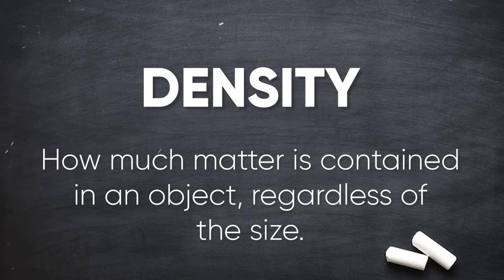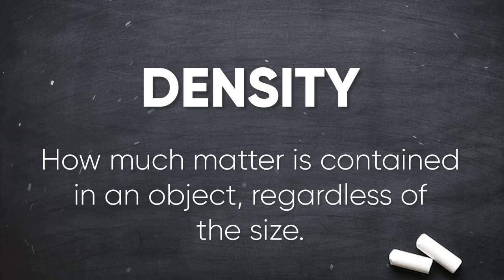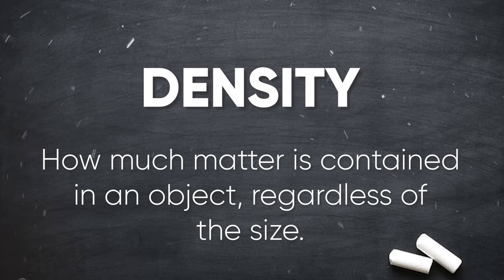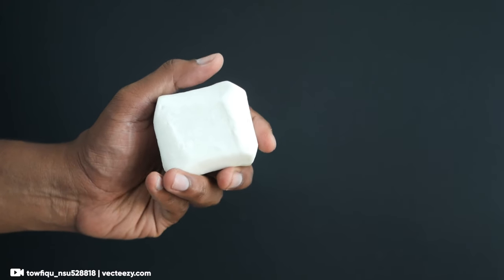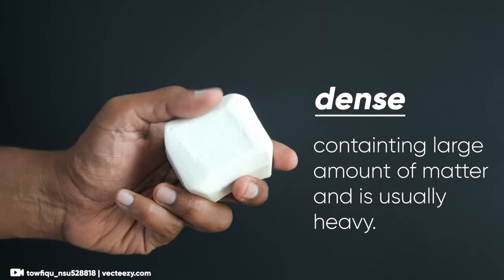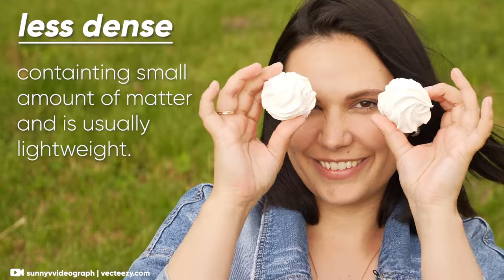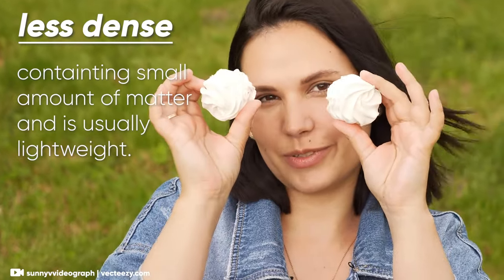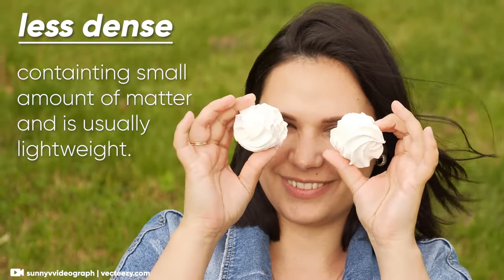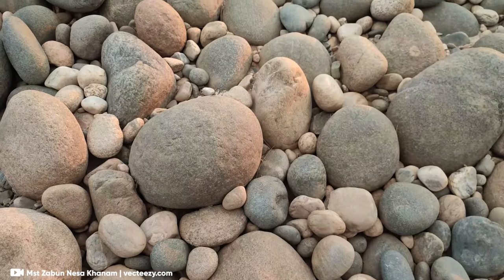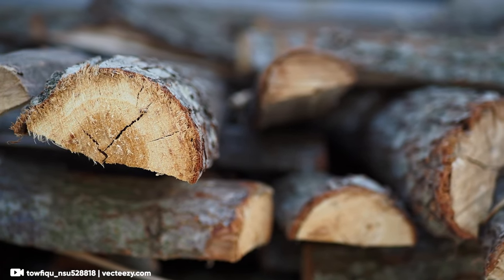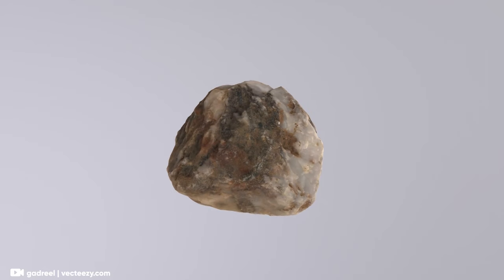Density tells how much matter is contained in an object, regardless of the size. It is somewhat related to mass. A material with a large amount of matter inside is identified as a dense material and is usually heavy. Less dense materials are those containing less matter. They are usually lighter. For example, a rock is denser compared to a piece of wood with the same size, because the rock contains a larger amount of matter inside it.